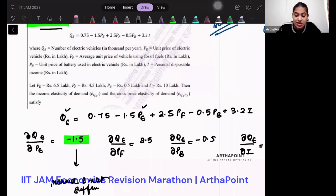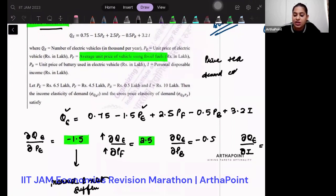Then I see that this price elasticity is coming positive. So when price of one commodity—not elasticity, just differentiation—this is the average unit price of vehicle using fossil fuel. So when this increases, the demand of this increases. Just think about this: when price of tea increases, the demand of coffee increases. What are these goods? They are substitute goods. That means E and F are substitute goods.